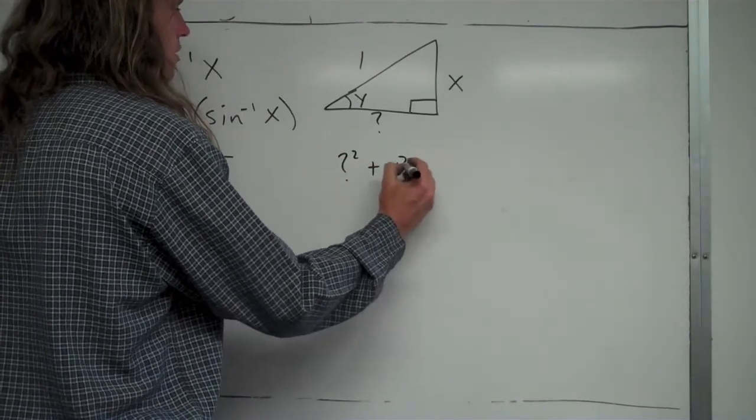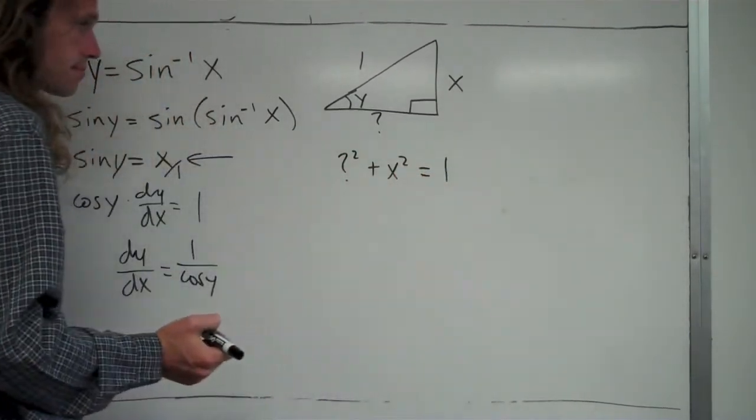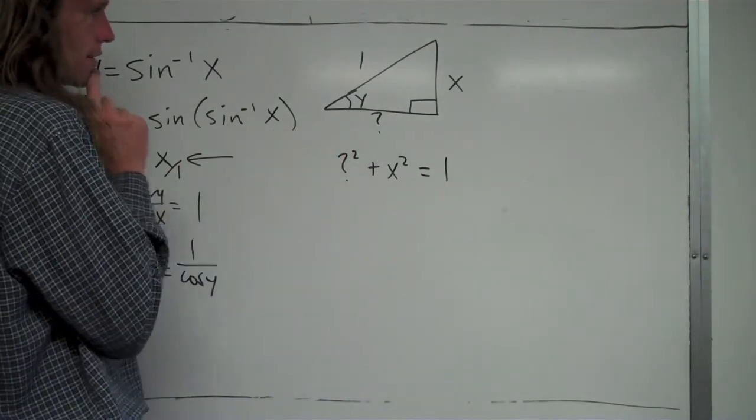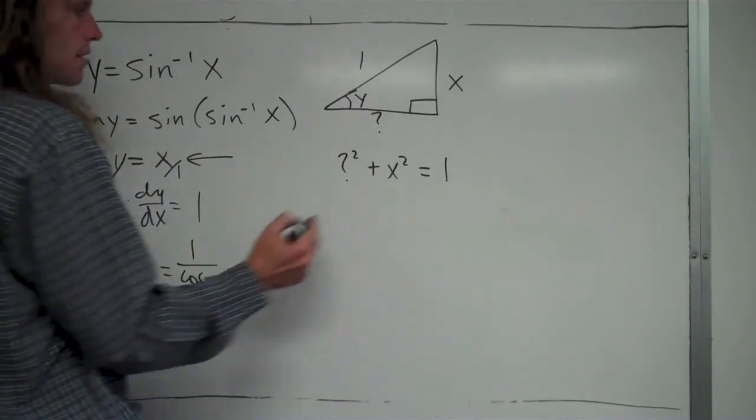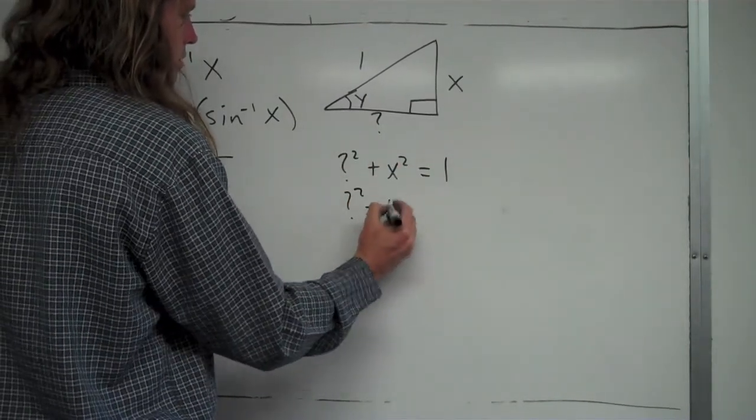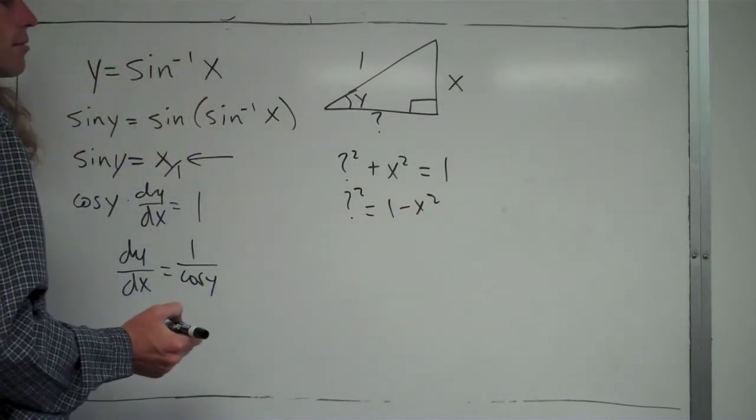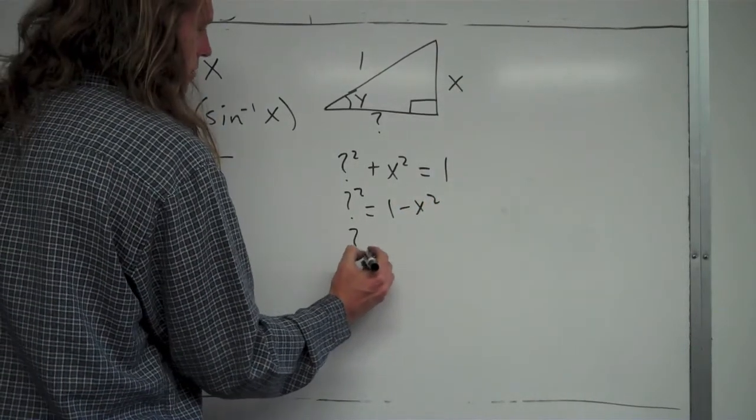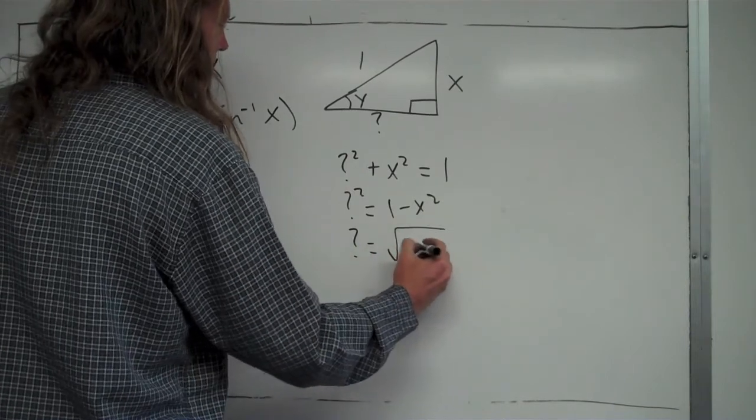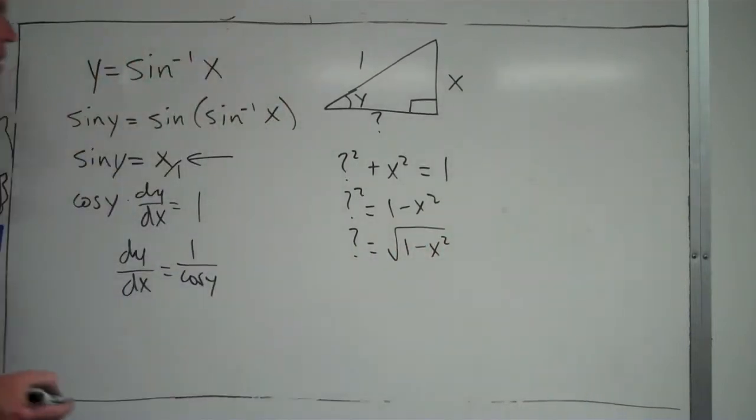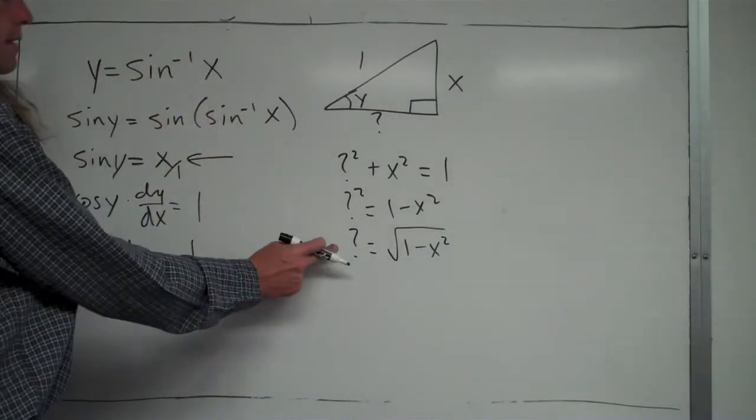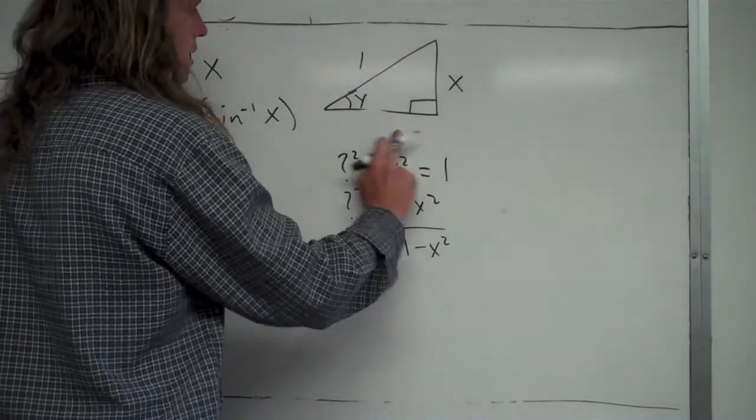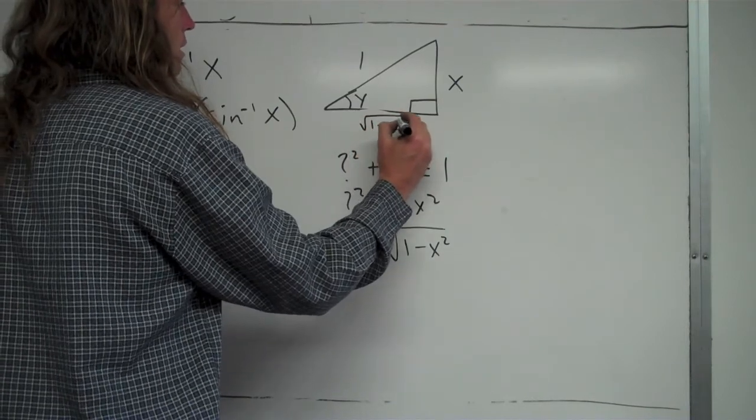I'm going to use the Pythagorean theorem to figure out that missing side. So it would be question mark squared plus x squared equals 1 squared, which is 1. I'm trying to find this question mark side right here, so I'm going to subtract x squared from both sides, then take the square root of both sides. Now it should technically be plus or minus √(1-x²), but since I'm dealing with triangles, side lengths, I know it's a positive value. I can't have a negative value for a side length. So this missing side length right here is √(1-x²).